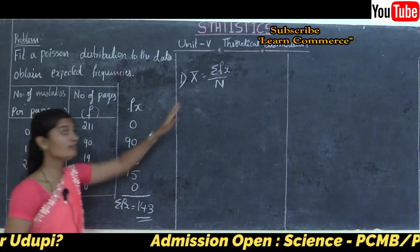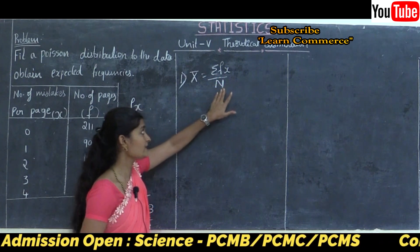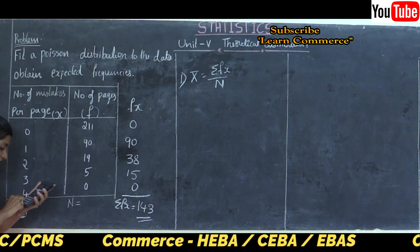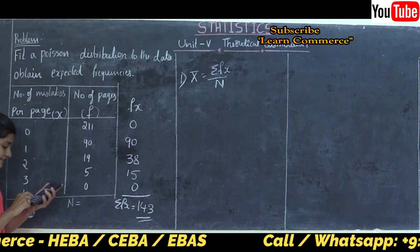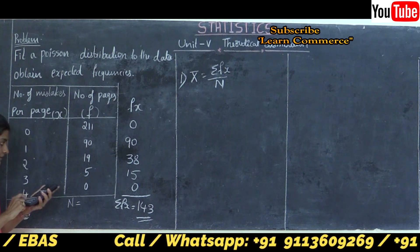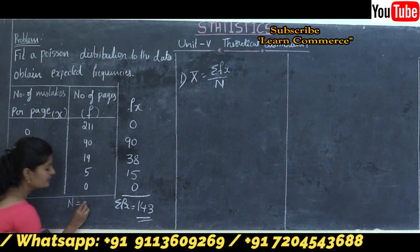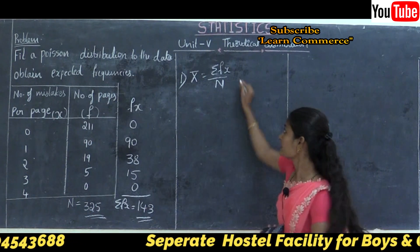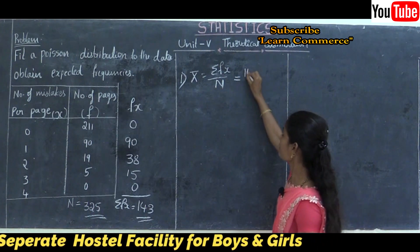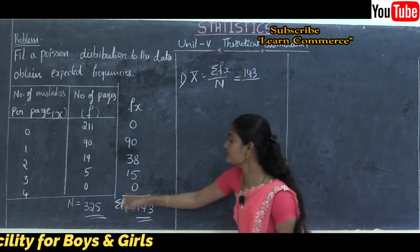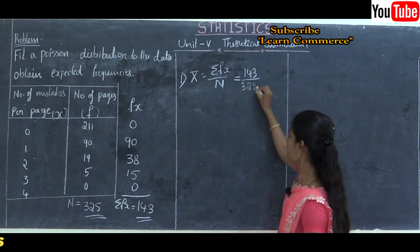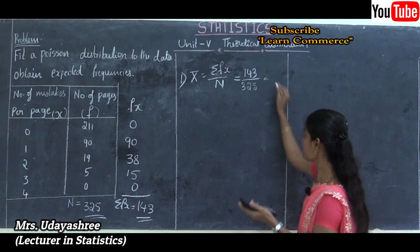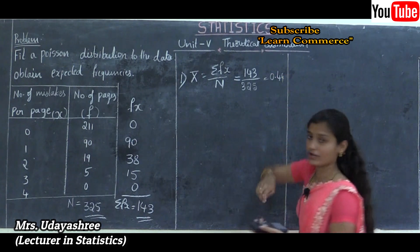Next we need to calculate capital N, the total frequency. N = 211 + 90 + 19 + 5 + 0 = 325. Substituting into the formula: X-bar = 143 / 325 = 0.44.